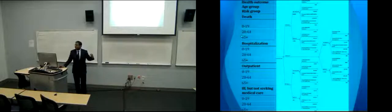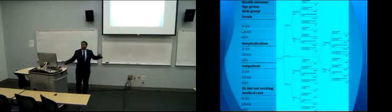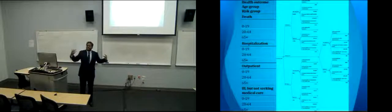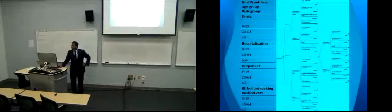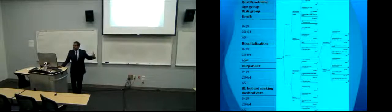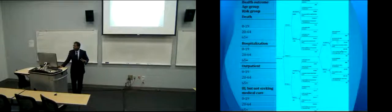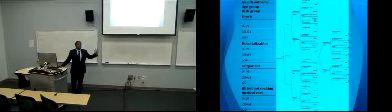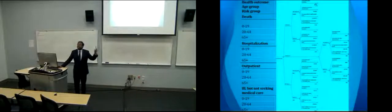High-risk groups are people who are immunocompromised and much more susceptible to influenza infection. In this decision tree, there's a probabilistic scenario of a person experiencing different health outcomes based on their age group and risk group: low-risk children, high-risk children, low-risk adults, high-risk adults, with the corresponding four health outcomes in each. Based on the health outcome each individual experiences, there's a corresponding cost associated with each scenario — including medical costs and productivity loss.